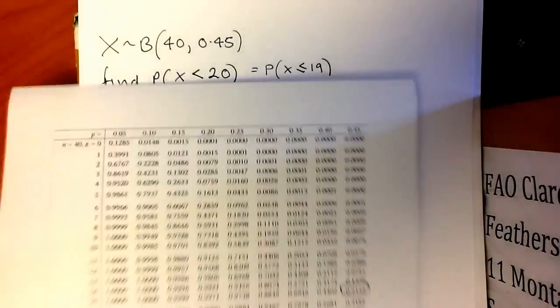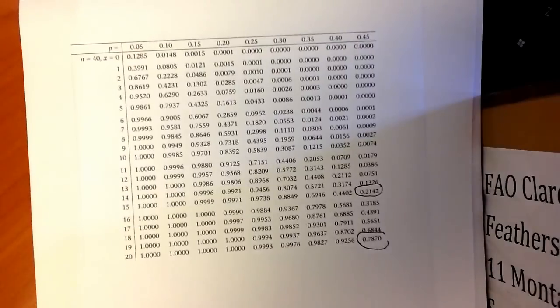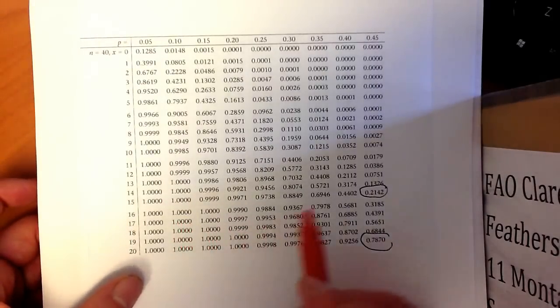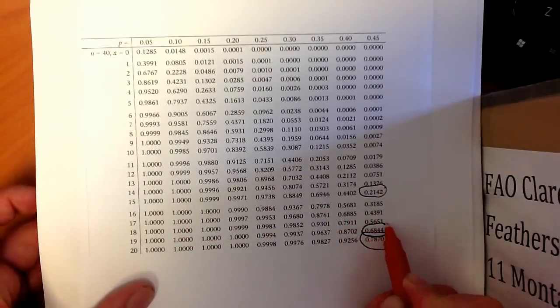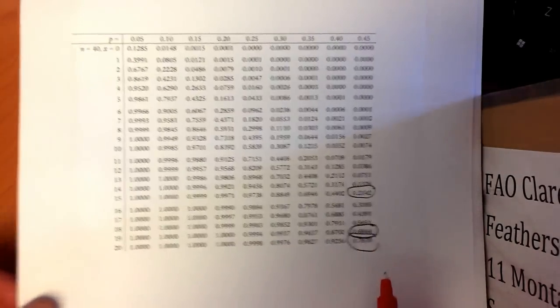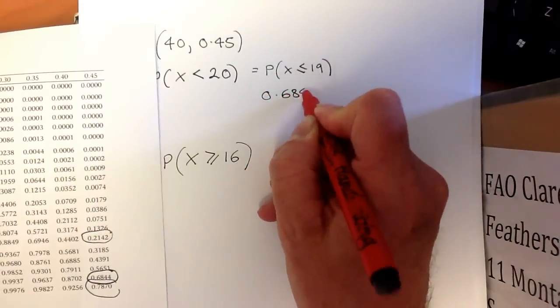If we go to our tables, and I've taken an extract from the back of our books, then less than or equal to 19 is 0.6844. We can answer that question directly. The answer is 0.6844.